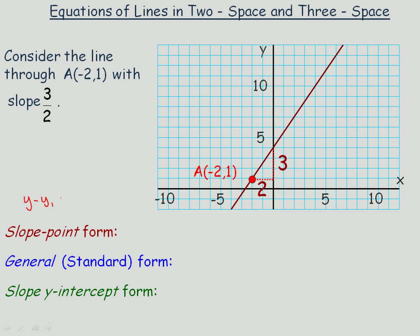It's y - y₁ equals m(x - x₁), where y₁ and x₁ represent the coordinates of a point on the line. You get that by just rearranging the slope formula. So x₁ and y₁ are the coordinates of a point on the line, and m is the slope.